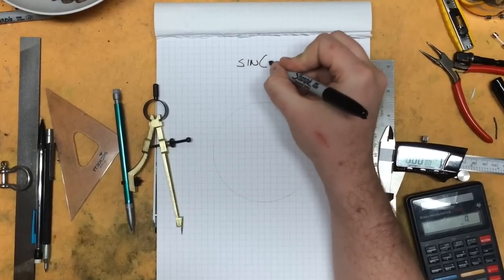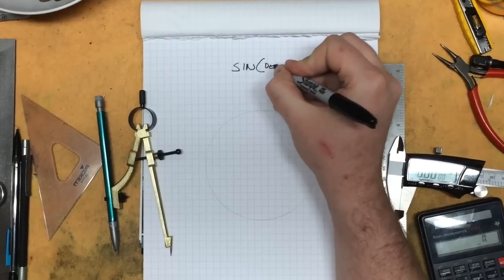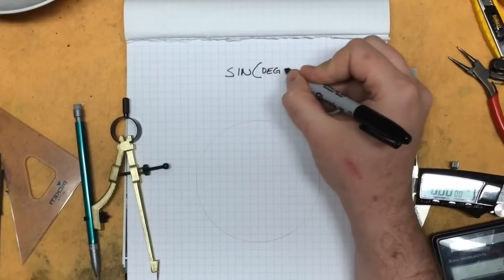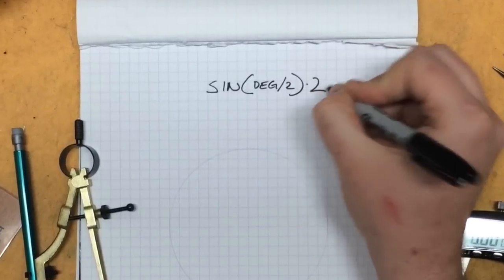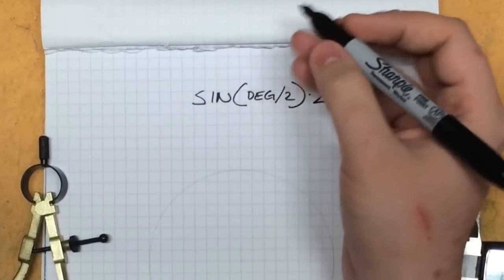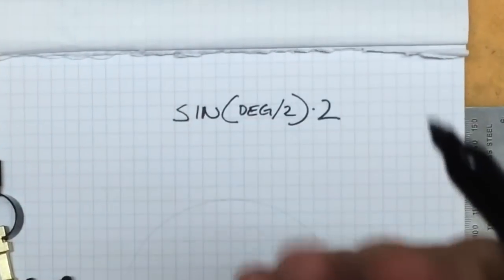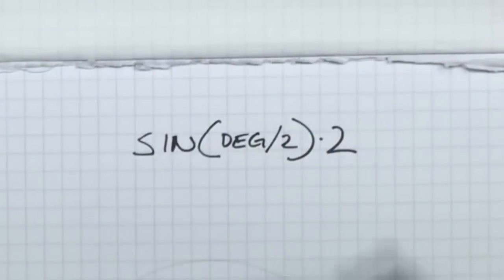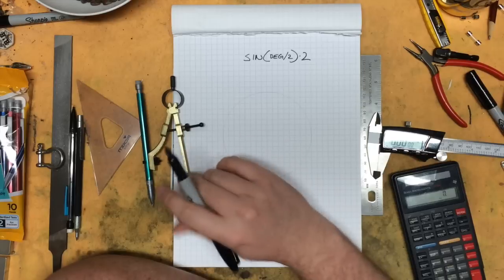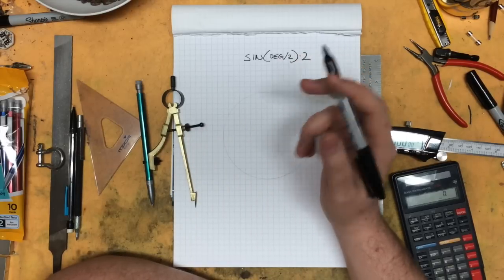What you really need to know is: you're going to use the sine of however many degrees you want to cover, divided by 2, times 2. Degrees is just going to be 360 divided by however many slices you want to make the circle cut up into.